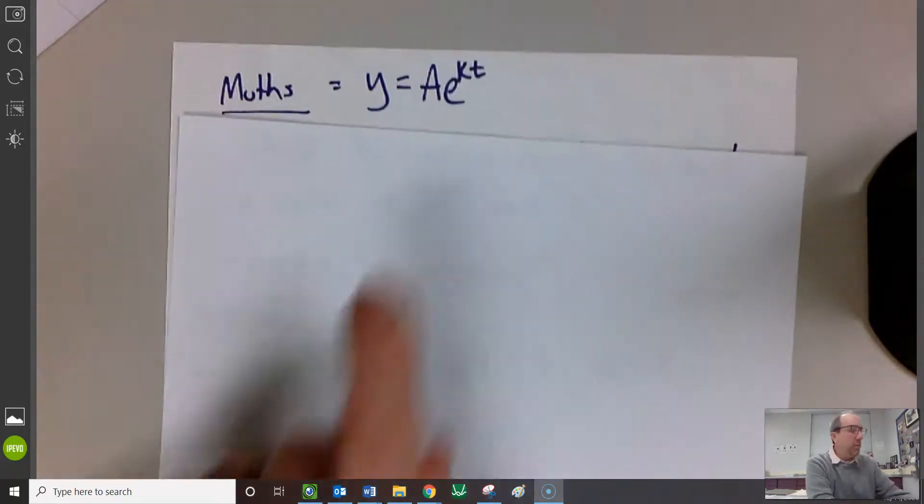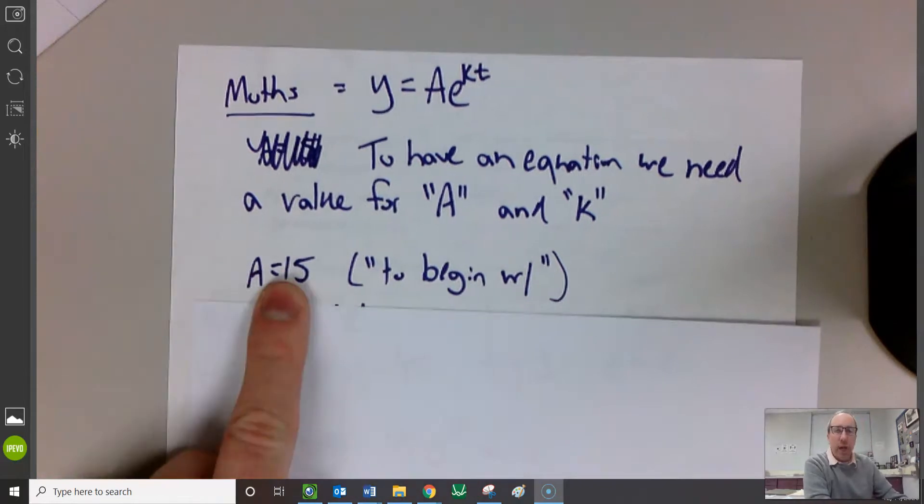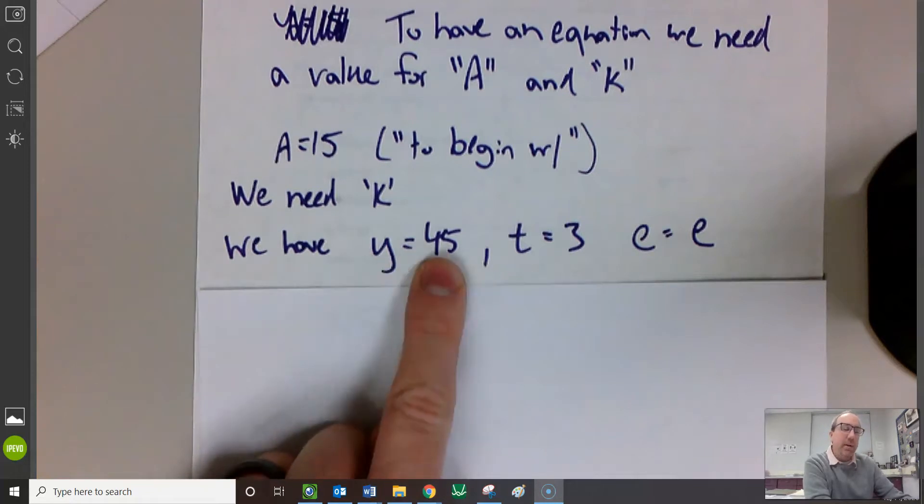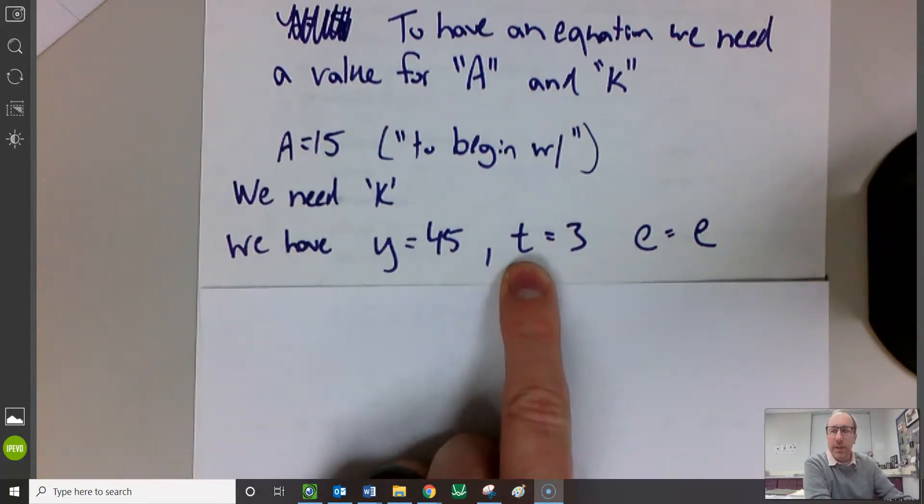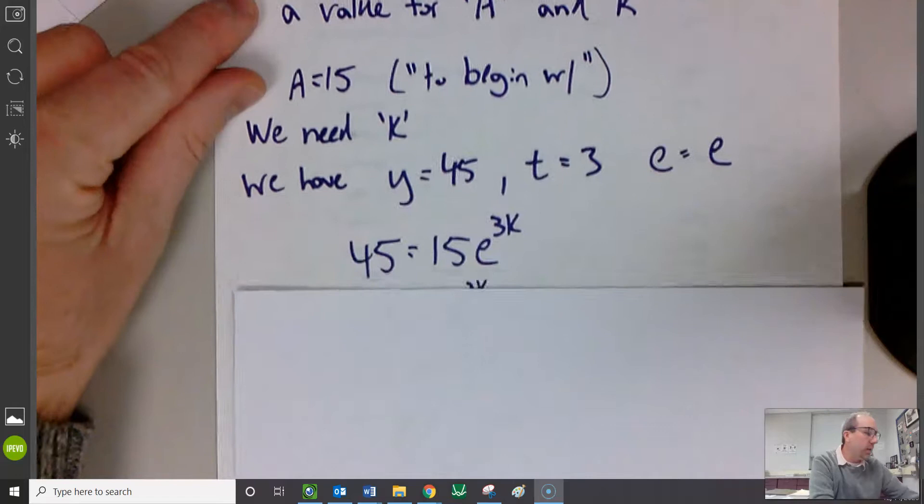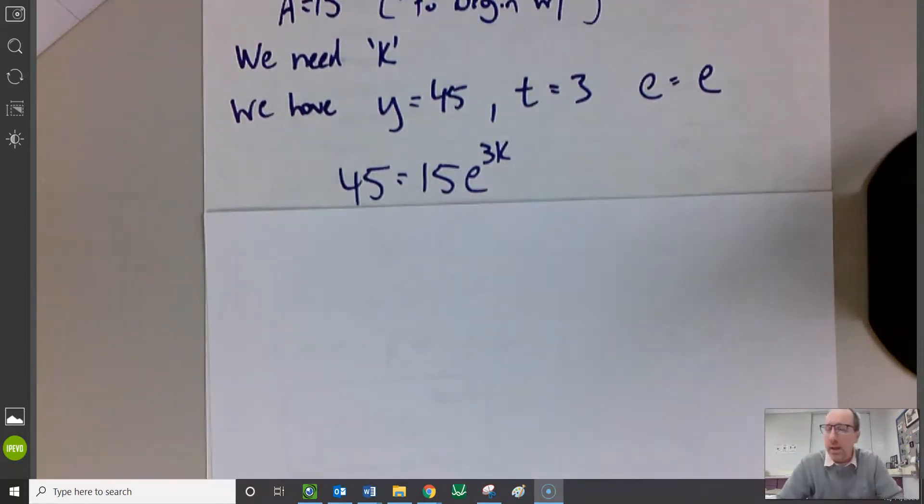So let's check it out. Moths are growing exponentially. There are 15 moths to begin with, that's A. There are 45 moths, that's what y would be, after three days. And e is just e. If we put all this stuff where it belongs, there's only one variable, variable K. We can find what that K comes from. If they're growing, K should be some positive number. The bigger K is, the faster they're growing. From here, we're just solving an equation. This is what we just got on taking, or you guys are going to take your quiz on.